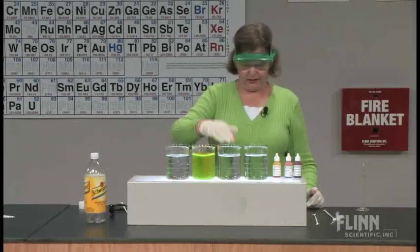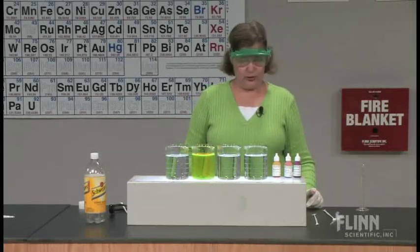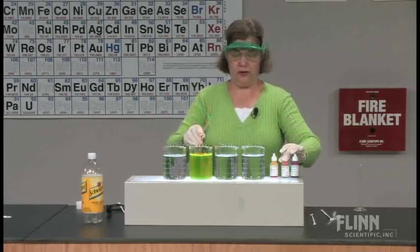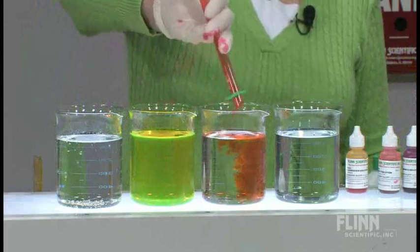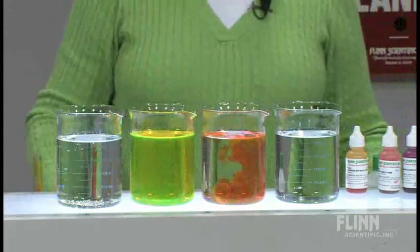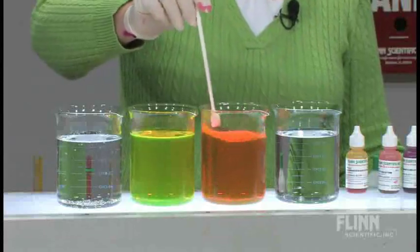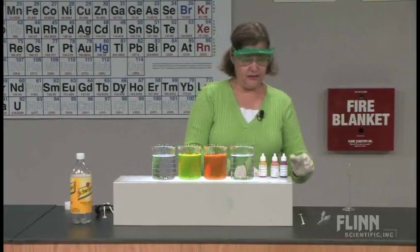The second beaker contains ethyl alcohol, and the dye that we're going to put in there is eosin. Eosin is insoluble in water, so let's pour that into the ethyl alcohol and we have a nice orange color there. I'll mix that up to get a uniform orange color.